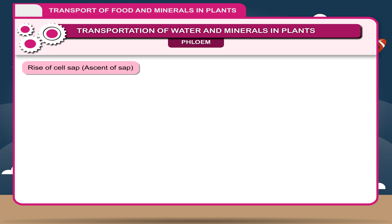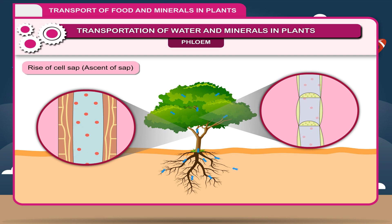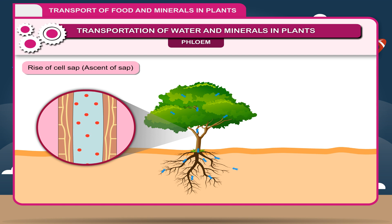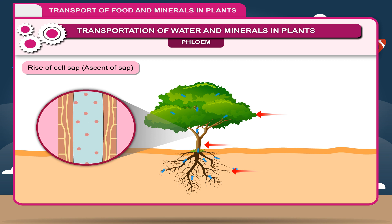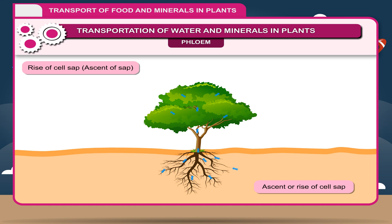Rise of cell sap — Ascent of sap: In plants, it is an important feature to carry out vital activities, which occurs through xylem and phloem. Water is absorbed through the roots and conducted to other parts of the plant. The minerals in the form of water solution are also absorbed by the xylem from the soil. Thus, xylem acts as a pipeline for conducting water. The water and mineral solution absorbed by the roots and conducted upwards to the stems, leaves, flowers, and other parts is called ascent or rise of cell sap.